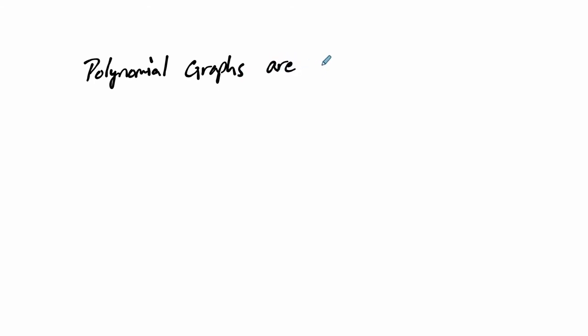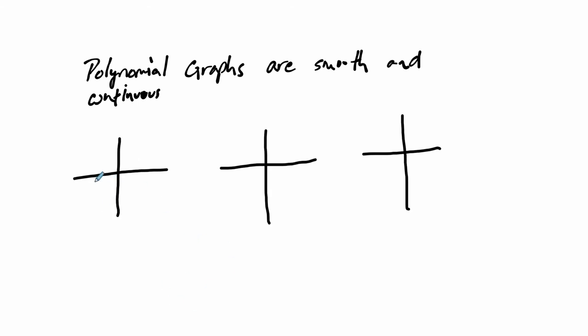The first thing we should say is that polynomial graphs are smooth and continuous. Now, that might bring something visual to your mind — you might have a picture of what this means, but we should show you. Let's look at an example of smooth and continuous.